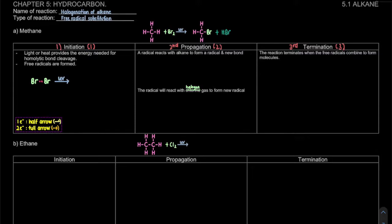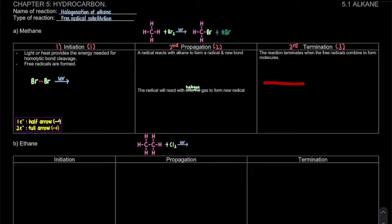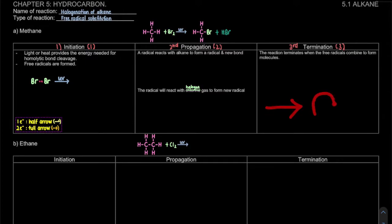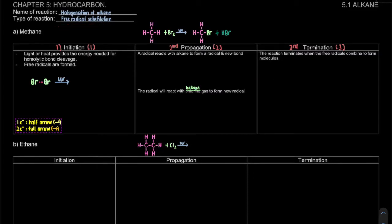For all the mechanism - mechanism is actually the movement of electrons. Since we're going to talk about free radicals, a free radical will form with only one electron. It means that the reaction we're going to use is a half arrow. A half arrow - if it's a straight line it looks like this, but for the mechanism we're going to use it as a curve arrow with a half head. That is for the case of free radical substitution. For full arrow reactions, we'll learn those later. But for free radical substitution, we're going to use the half arrow.